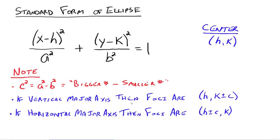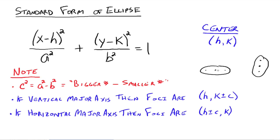If you have a vertical major axis, then the foci would be at h, k plus or minus c. You'd know the center, and to reach the foci you're adding or subtracting the c distance to the y value of your center. If you have a horizontal major axis, then the foci are at h plus or minus c, k — because now you're going right and left, adding and subtracting to the x part of the center. That's the idea for the standard form of an ellipse.